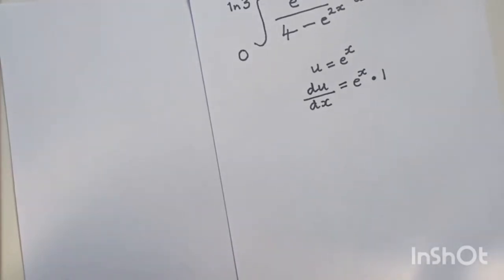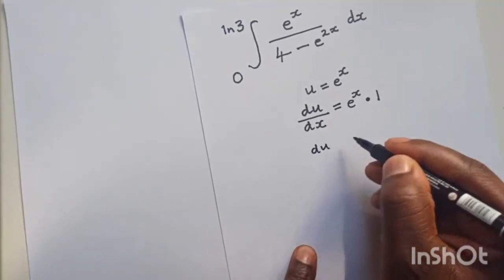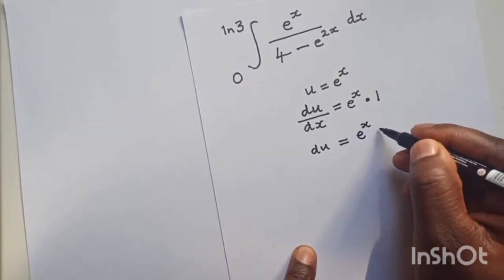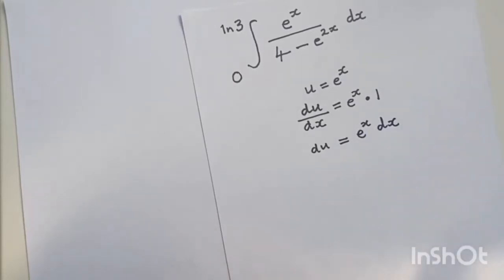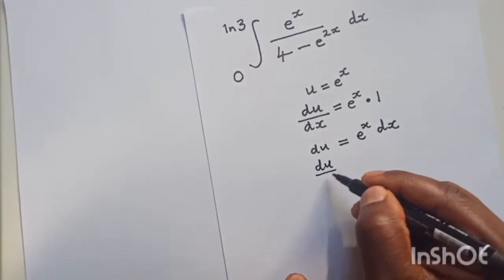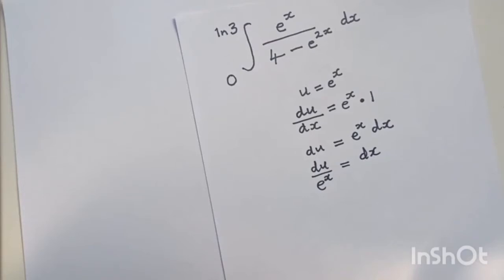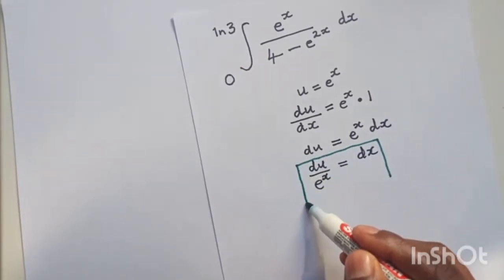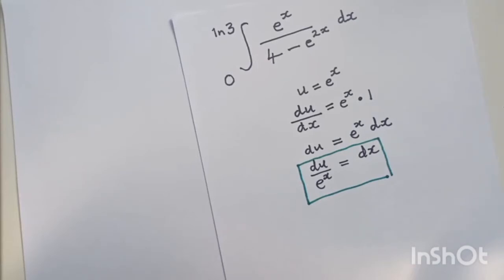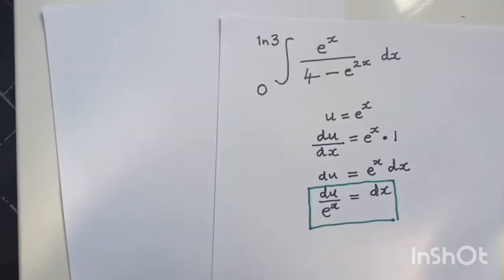When differentiating exponential functions, you multiply the original function by the derivative of the power. So e to the power of x is the original function and its derivative is 1. To make dx the subject of the formula, using cross multiplication, I divide du by e to the power of x, so dx equals du over e to the power of x. That completes stage one.